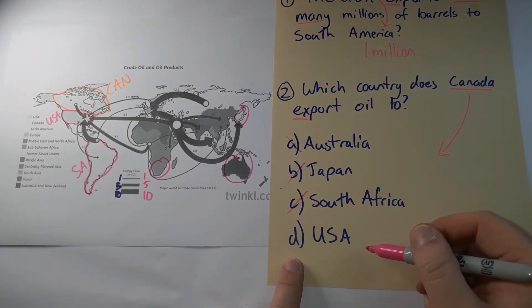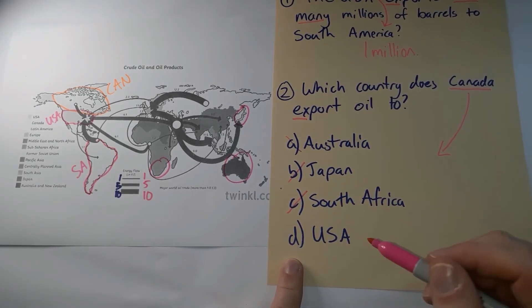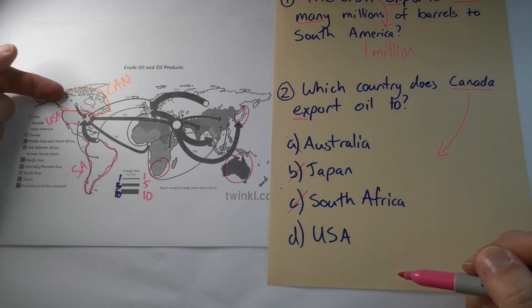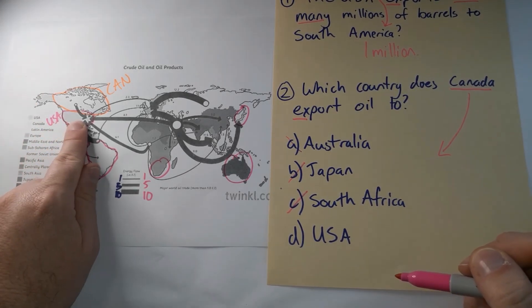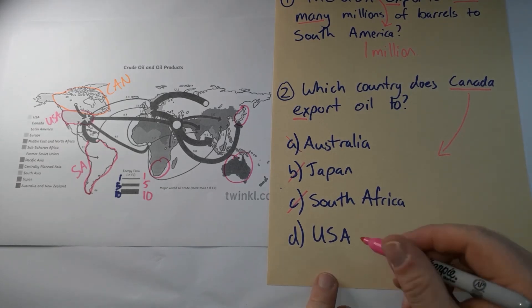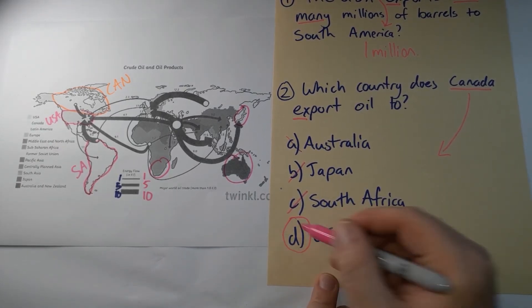So I'm left with the USA. It's got to be correct but let's check. Is there an arrow leaving Canada and heading towards the USA? Yes. So D would be my answer.